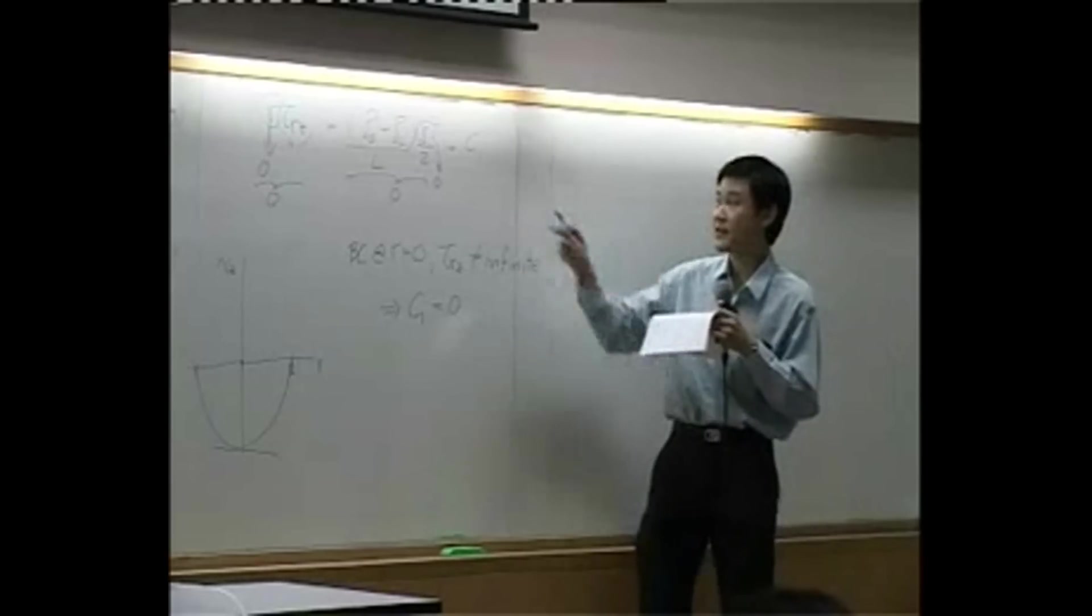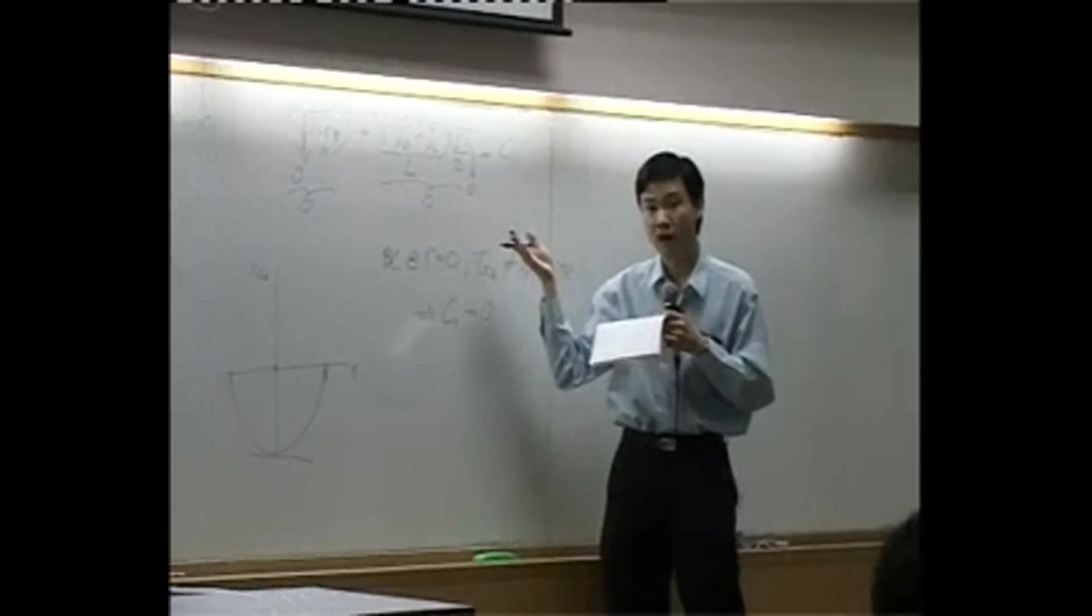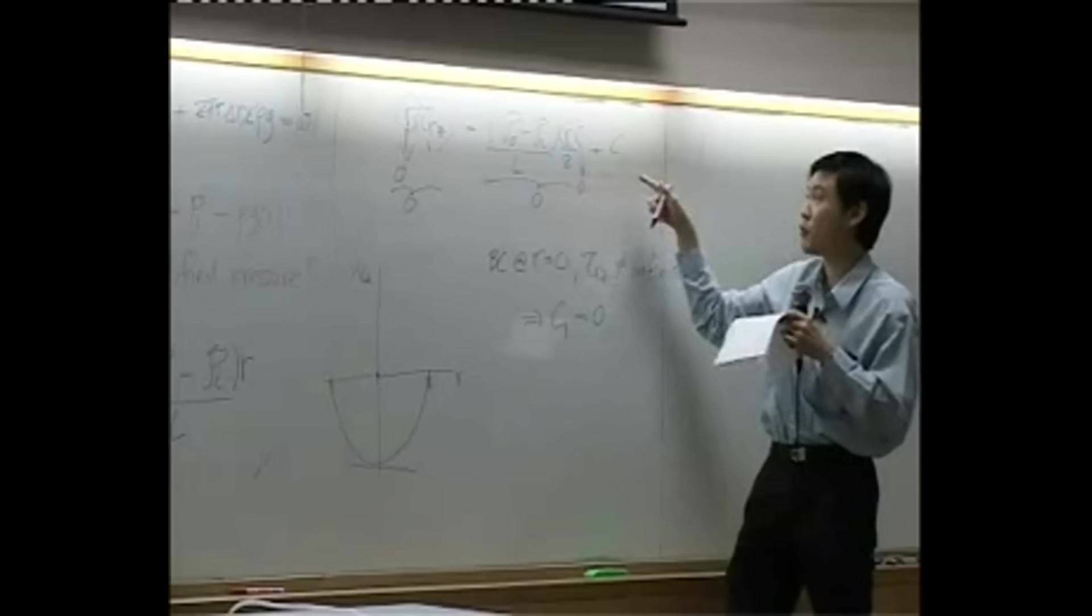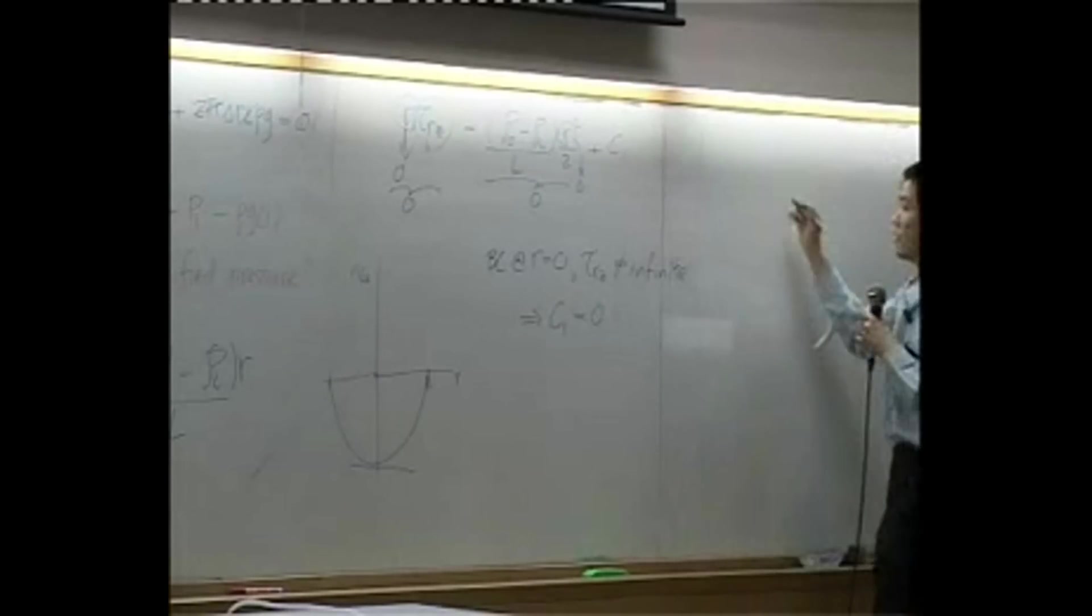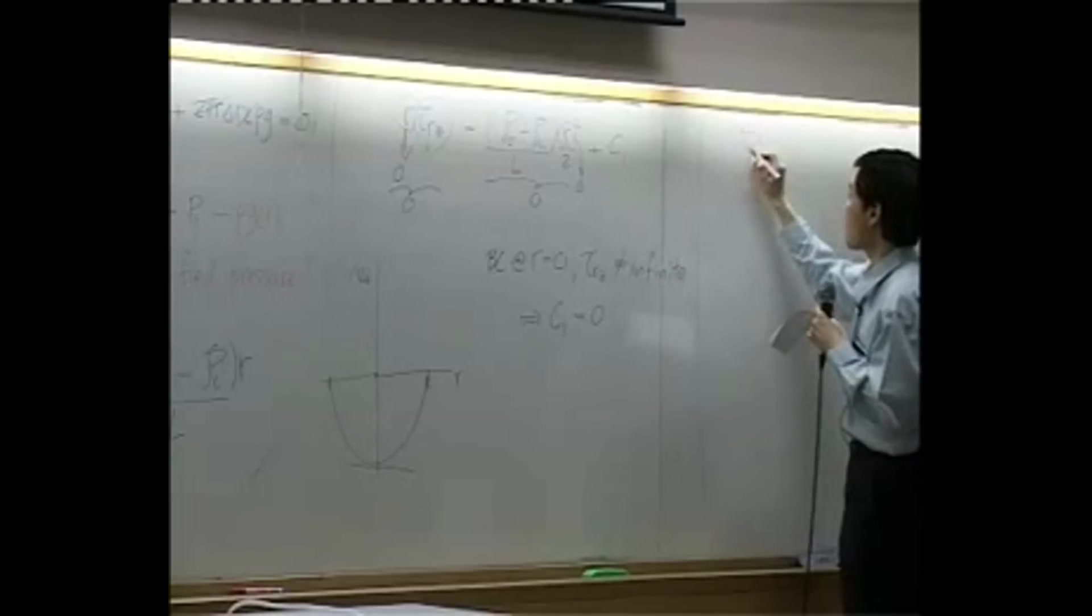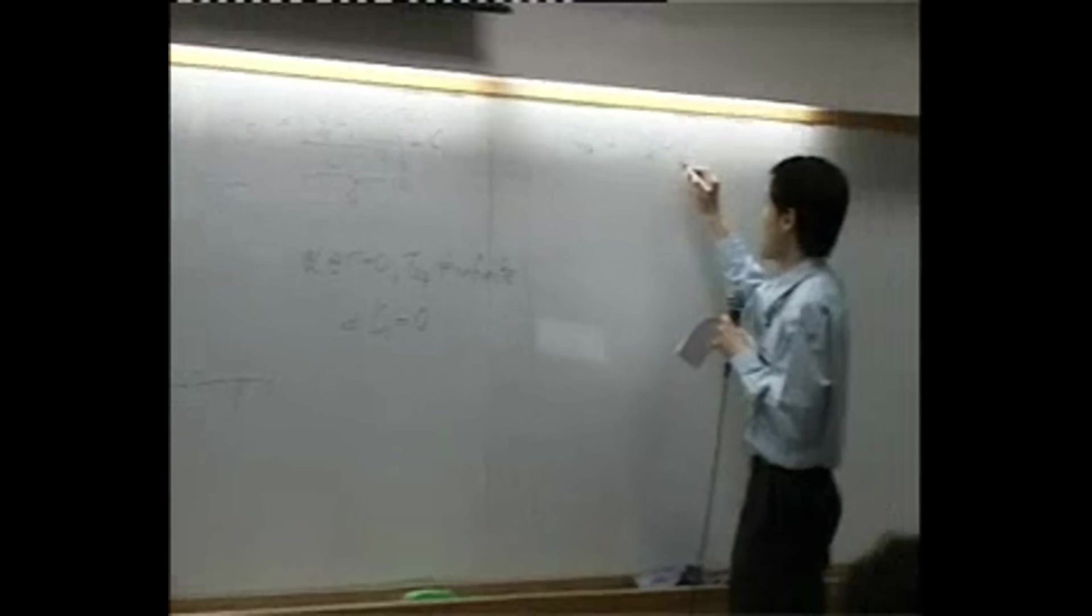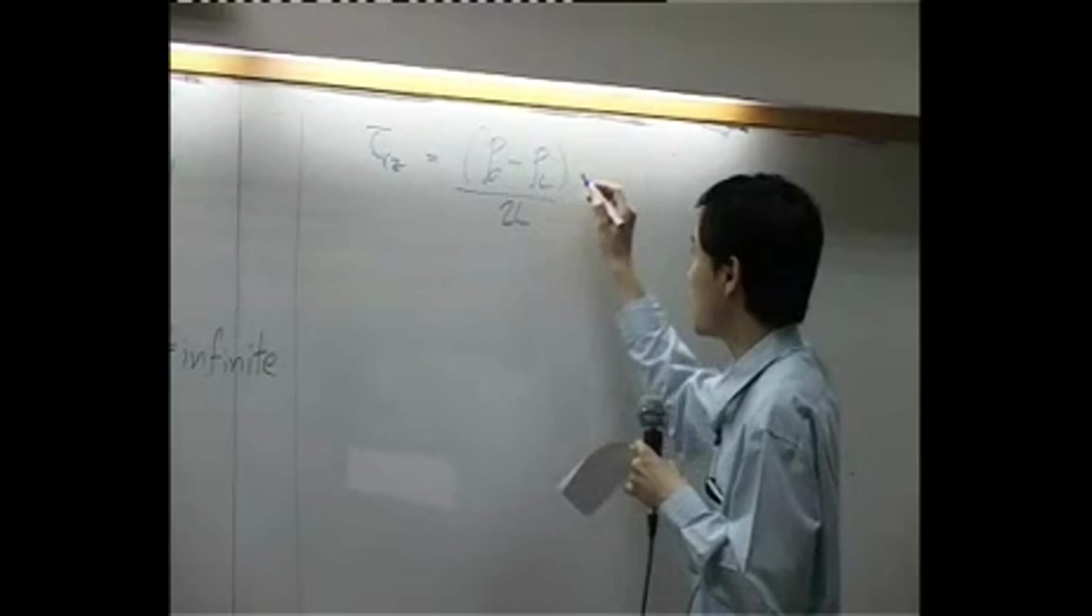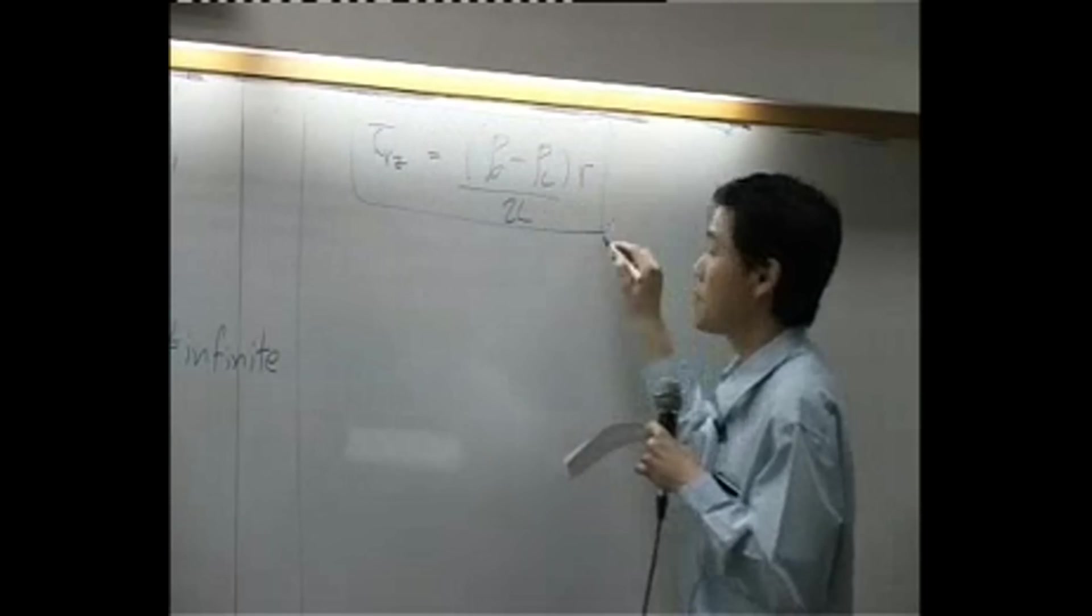Once you already determine that C1 is zero, then you can divide everything by r. R here and r there will be dropped because you will no longer have C1 over r. So you will have tau rz equal to pressure difference over 2L times r. This is our shear stress profile.